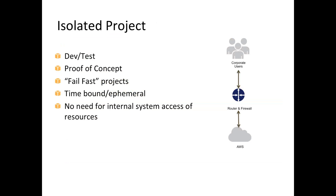An isolated project is a common pattern. Customers want a project they're working on that has no access to the Internet. This is great for dev and test, proof of concepts, and fast-fail projects — what would it be like to run a particular architecture with an Oracle database at the back end, for example? This is a chance where you can set something up quickly, give it a test, and when you're done with it, blow it all away. It works really well for people with security concerns — they can create this isolated environment and destroy it when done.